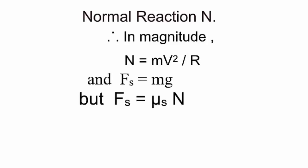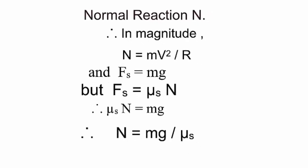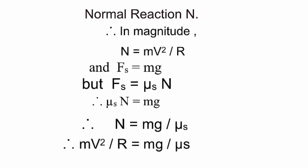So N = mv²/R. Also, frictional force is equal to the weight of the body, that is mg. As we know, frictional force is μ into N. Therefore, μN = mg, which gives N = mg/μ. Substituting into the first equation, mv²/R = mg/μ.